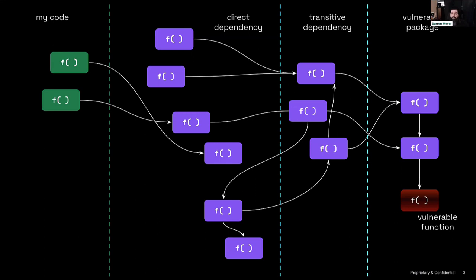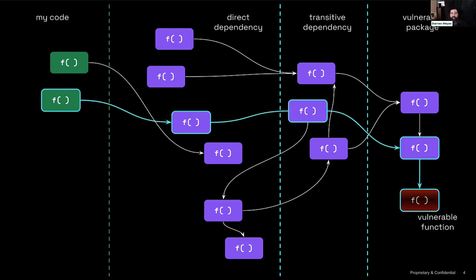My key security question is: is there a path from green to red? It's like a Google Maps problem — can I get to this city from here? And the answer is yes, we've actually found one path. I know I've written a function that calls this function, that calls this function, that ultimately calls a vulnerable function. That means, in the absence of any compensating control, I have a real risk — any adversary that can talk to my application could potentially exercise the vulnerability.